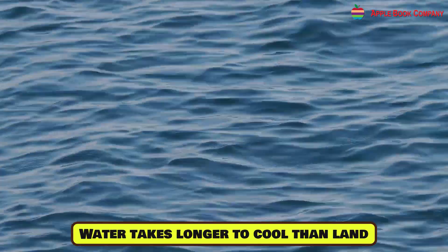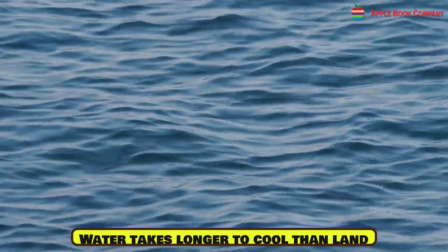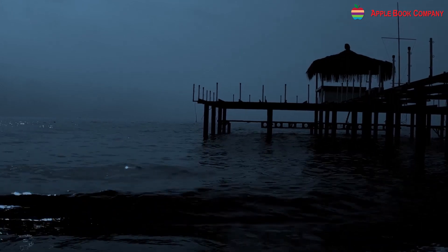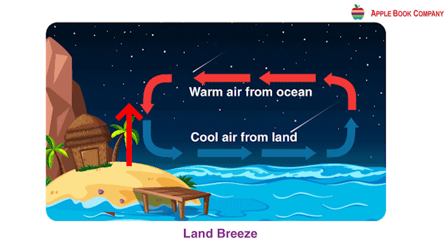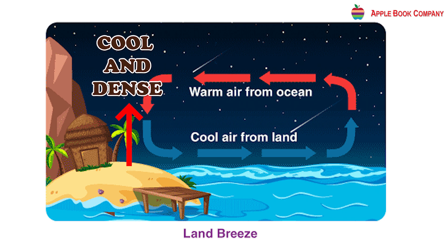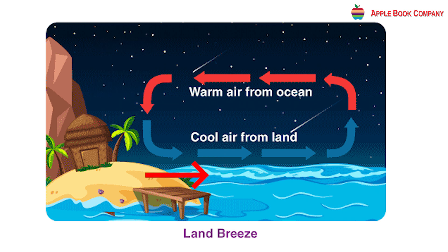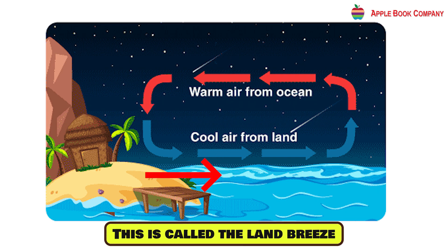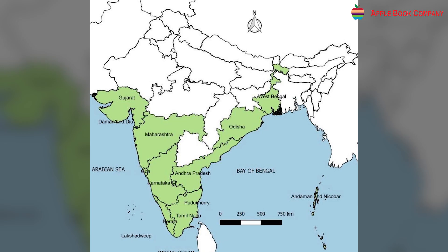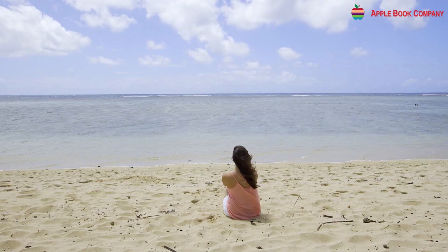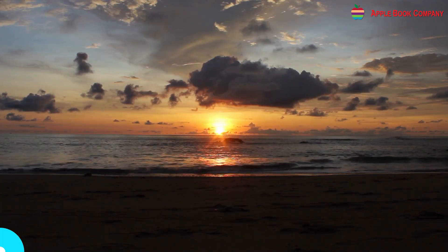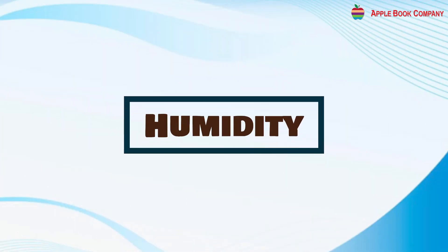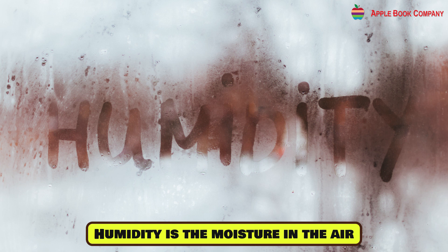Water takes longer to cool than land. So at night, the land cools faster than the sea. Wind over the land gets cool and dense, and it now blows from the land towards the sea. This is called the land breeze. In coastal regions, people feel sea breeze during the day and land breeze during the evening.